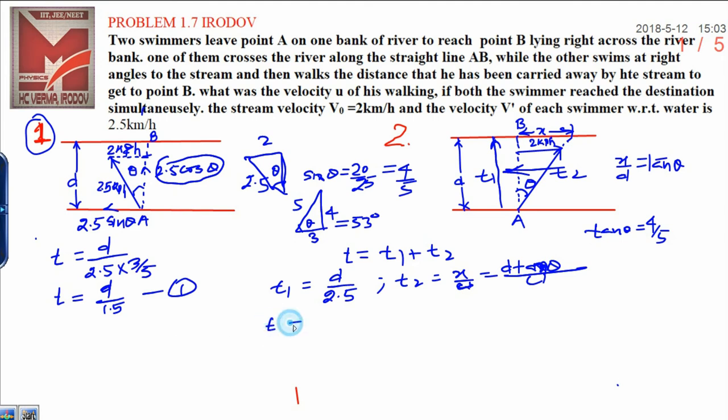Now in order to calculate t for swimmer 2, first of all calculate: t is equal to d upon 2.5 plus d tan θ, which is 4 upon 5, times 1/u. I want to calculate the value of u. Name this equation 2.